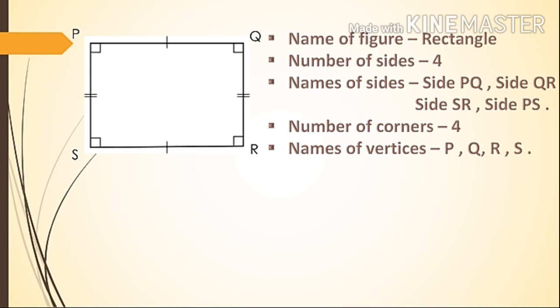Number of corners, means kopre, is four. Names of vertices, the other name for corners is vertex, means shirobindu. Names of vertices: P, Q, R, S. How many vertices? Four. P, Q, R, S. Do you understand?